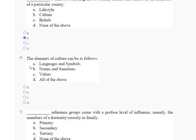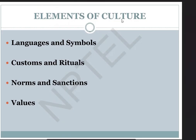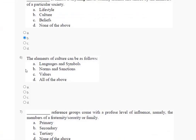Question number six: the elements of culture can be as follows — option one is language and symbols, second is norms and values, third is value, fourth is all of the above. The explanation: elements of culture include language and symbols, customs and rituals, norms and sensitivities, and values. So the correct answer for question number six is option D — all of the above.